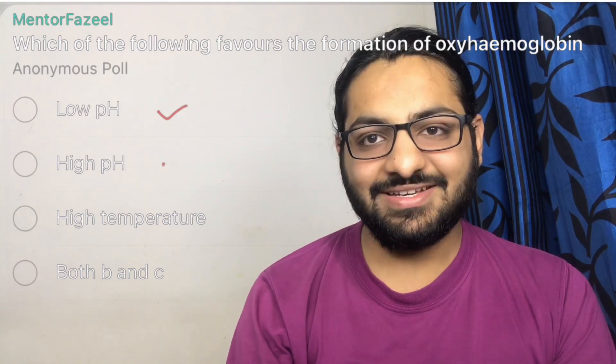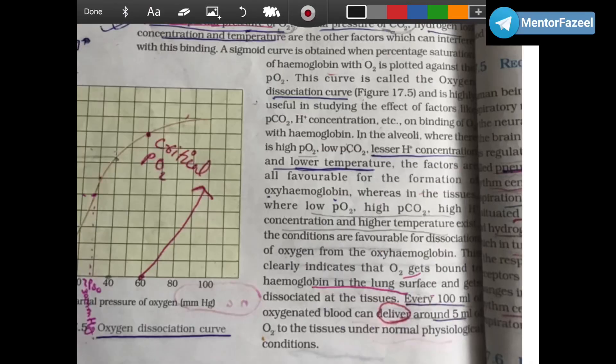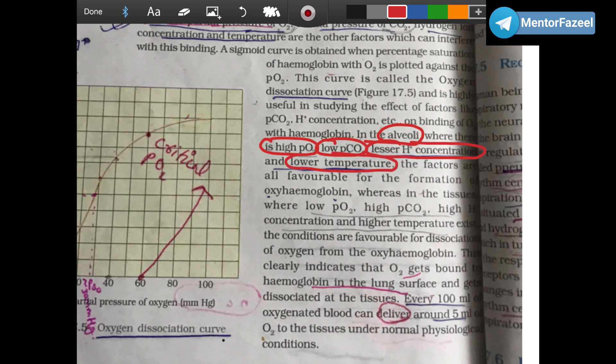In this example, just see: which of the following factors favors oxyhemoglobin formation? Low pH, high pH, high temperature, both B and C? Now let's see what is given in your NCERT. Open page number 274 of your NCERT, topic number 17.4.1 Transport. There is high pO2, low pCO2, lesser H+ concentration and lower temperature. These factors are favorable for formation of oxyhemoglobin.